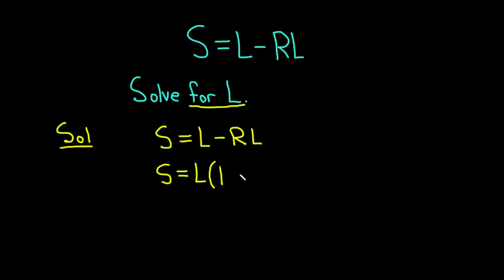And then to figure out what goes next, you ask yourself, what do you multiply by L in order to get negative RL? Well, negative R.